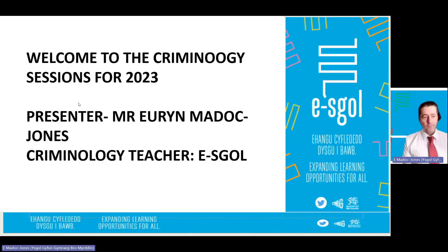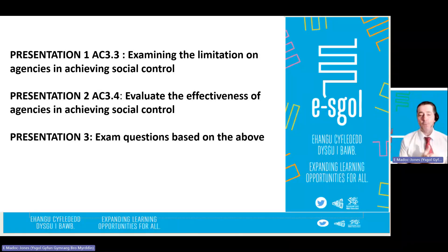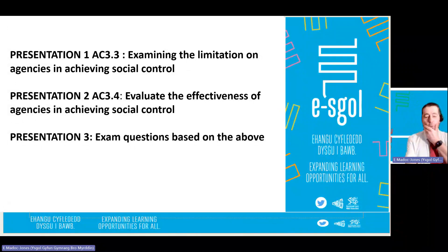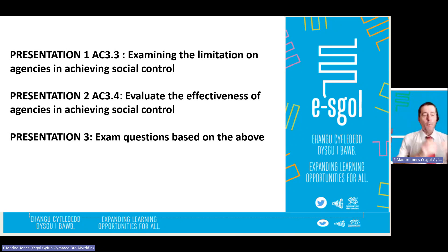What I intend doing for the next three sessions is discussing matters to do with 3.3 and 3.4. I assume that you already would have done 3.1 and 3.2, which is the role and contribution of agencies towards social control. So you will have looked at what the police do, what their powers are, what their roles are, you would have looked at the prison service, the CPS, the court system, so you know something about how they're set up and what they actually do.